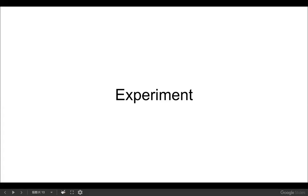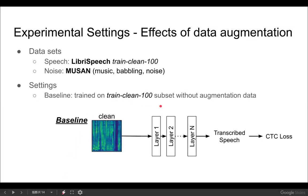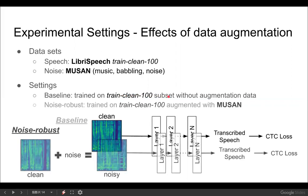We'd like to compare ASR models under different training conditions using our probing model. Here we choose to do data augmentation. We use LibriSpeech's TrainClean 100-hour subset as our speech corpus, and later augment the clean set with the MUSAN corpus, which has music, babbling, and noise recordings. We trained two types of ASR models: a baseline model trained only on the TrainClean 100-hour subset, and a noise-robust model trained on TrainClean 100-hour subset augmented with noises from the MUSAN corpus.